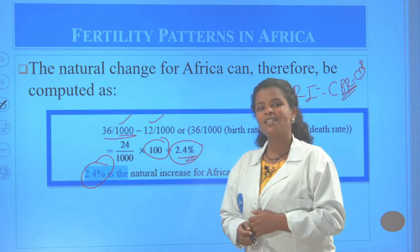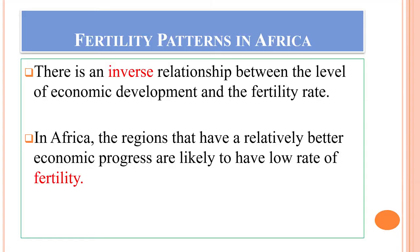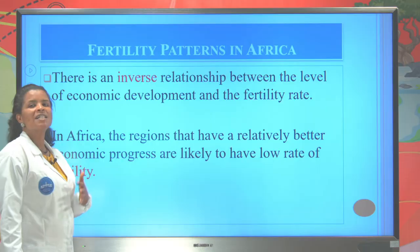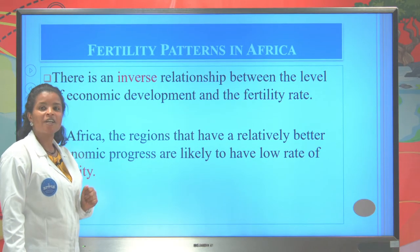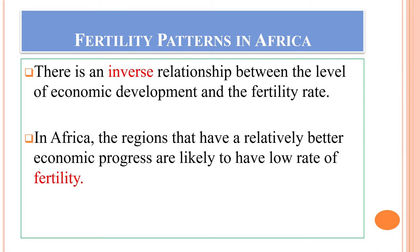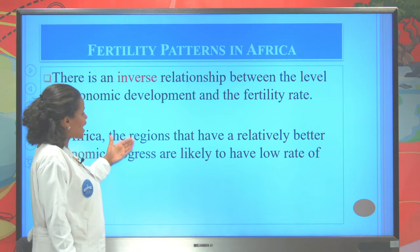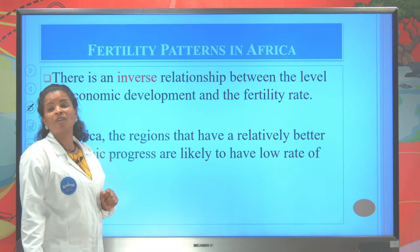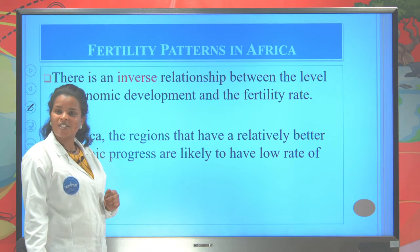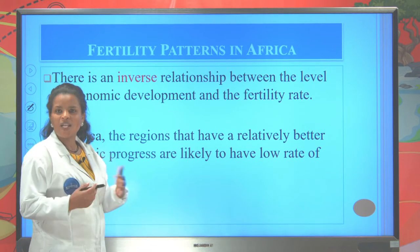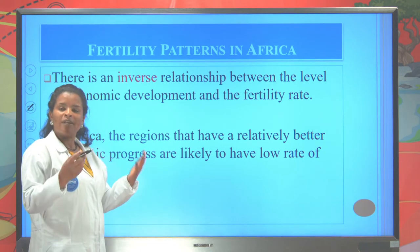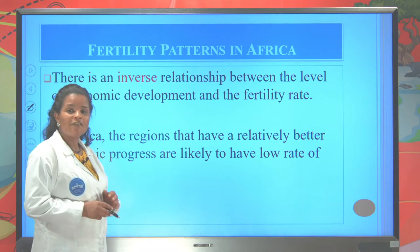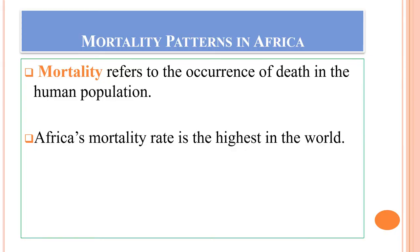The rate of natural increase in Africa is 2.4 percent: 36 minus 12 gives 24, divided by 1000, multiplied by 100. The rate of natural increase is high because the birth rate is greater than the death rate. There is an inverse relationship between the level of economic development and fertility — regions with relatively better economic progress are likely to have lower fertility rates. North Africa has lower fertility rates because it is more economically developed.